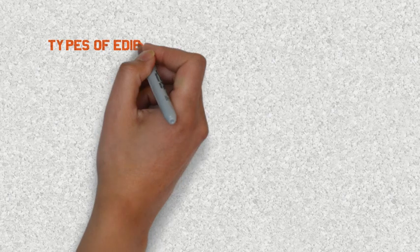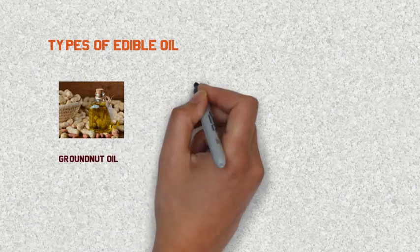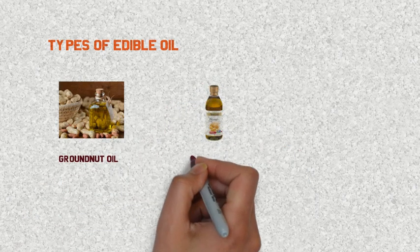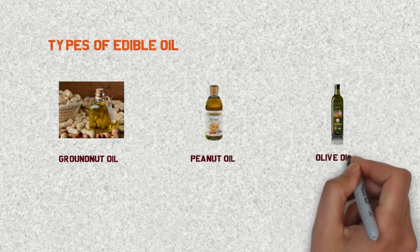Types of edible oil are groundnut oil, peanut oil, olive oil, etc.